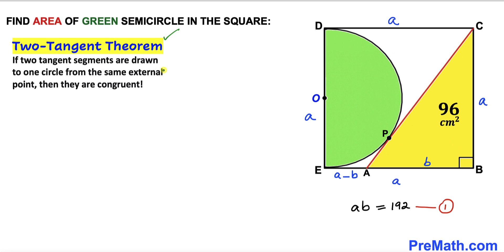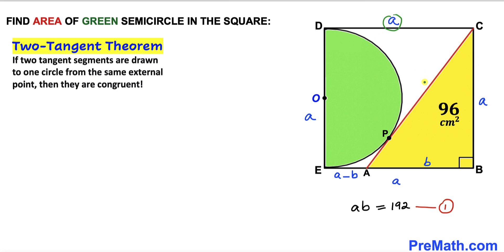Now let's recall the two tangent theorem: if two tangent segments are drawn to one circle from the same external point, then they are congruent. So segment CD and segment PC are congruent — if CD is lowercase a, then PC is lowercase a as well. Likewise, tangents EA and PA are congruent. So if EA is A minus b, then AP is also A minus b.